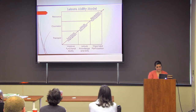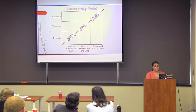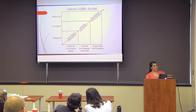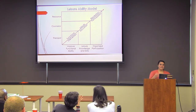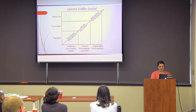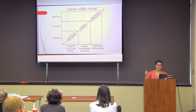The leisure ability model is therapeutic recreation services based on the client's needs. Everyone needs, wants, and deserves leisure — no matter their age, abilities, or disabilities. The CTRS will help the client overcome these barriers and facilitate development, maintenance, and expression of an appropriate leisure lifestyle. The three sections of the leisure ability model are functional intervention, leisure education, and recreation participation.